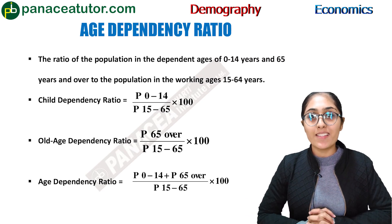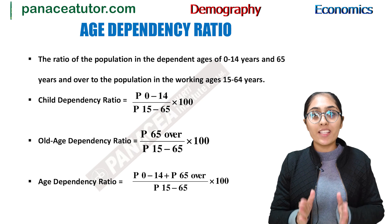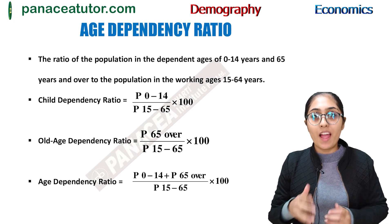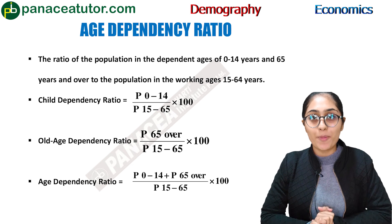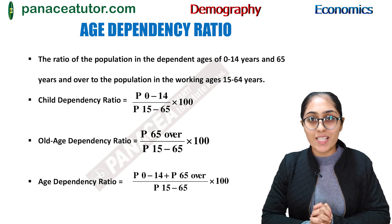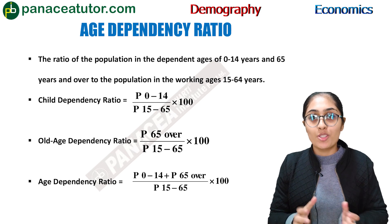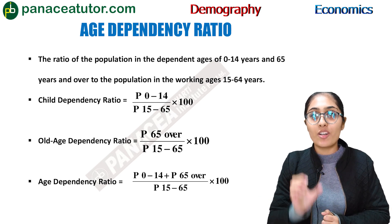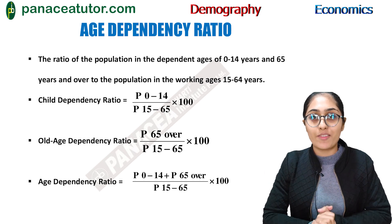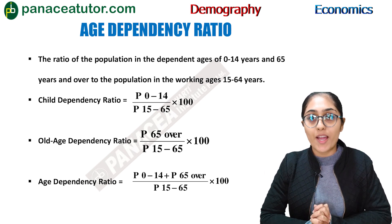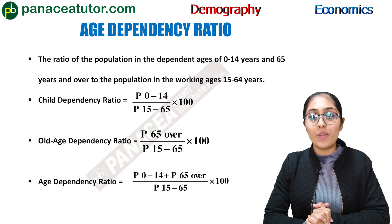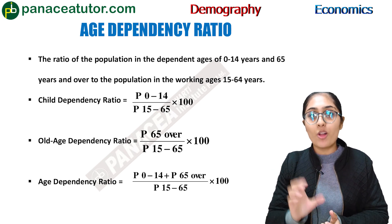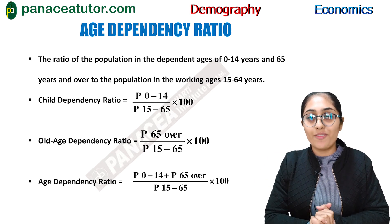Next we will study dependency ratio, which is of three types: age dependency ratio, child dependency ratio, and old age dependency ratio. Dependency ratio is the proportion of population who are dependent upon the working population. In India, the working population is considered between the ages of 15 and 65 years. Child dependency ratio means the number of children below the age of 15 years (between 0 to 14 years) who are dependent upon the working population (those between 15 to 65 years).